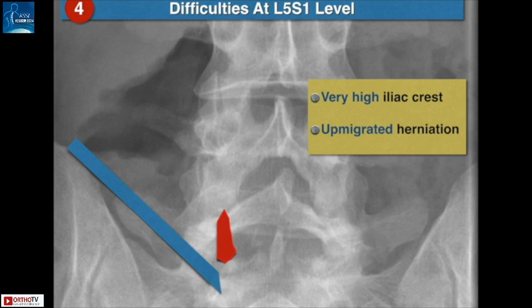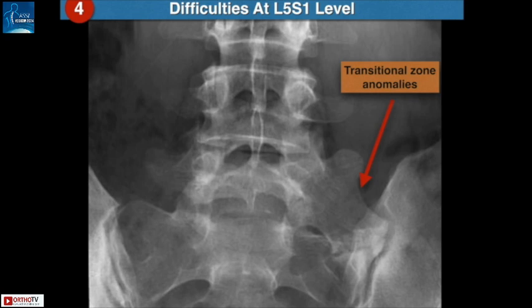Transforaminal endoscopy at the L5S1 junction is not always easy. If there is a very high iliac crest, the endoscope is downwardly inclined, and if you have an up-migrated sequestrated fragment in such cases, it will be impossible to remove. Transitional zone anomalies may also prevent an easy transforaminal approach.